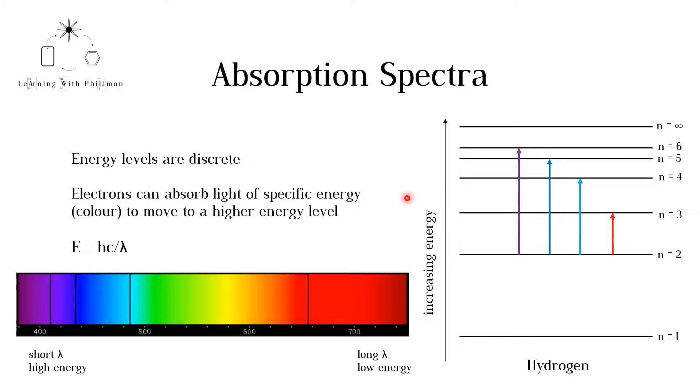Note that there are black lines in the spectrum where these colors used to be. This is because only these four colors are absorbed. The rest of the colors would go through the sample of hydrogen and be detected.